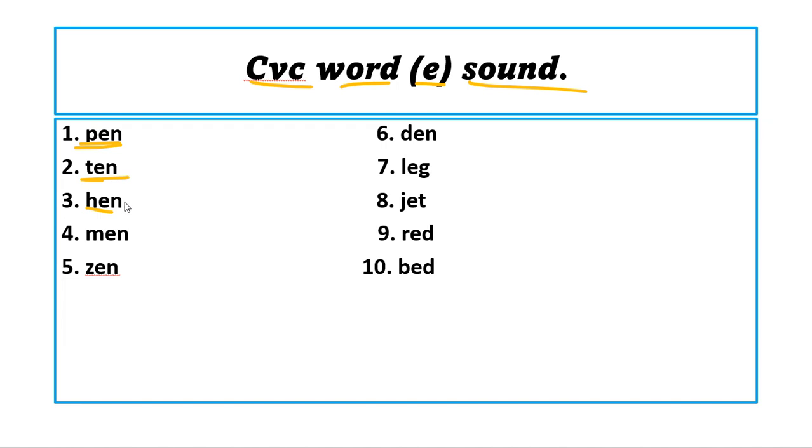Next we have the CVC word e sound. Number one we have pen. Number two we have ten. Number three we have hen, so baby chicken or the mom chicken, that is the girl chicken. Number four we have men. Men, that is another term for a boy. Number five, zen. It's a balance of a stone, it's a stone which has the color white or color black, we call it zen. You can commonly find this one in a spa or river. Number six, den. Number seven, leg. You use for running, walking, that is your leg. Number eight, jet. That is a plane or an airplane used in a war, when you are sending to a mission you must use a jet.